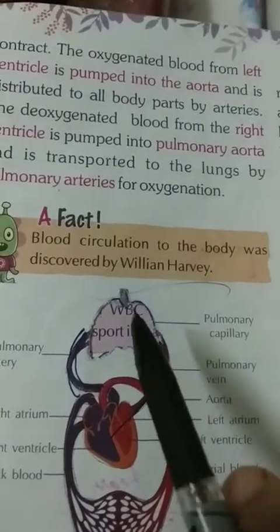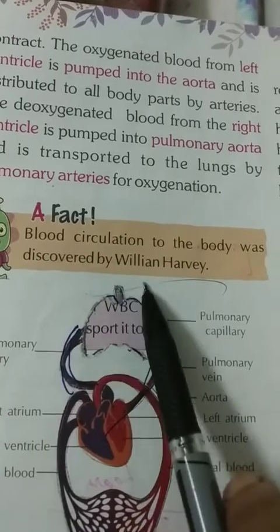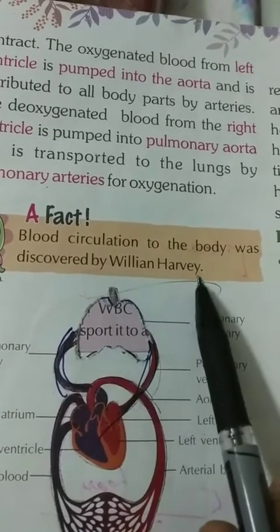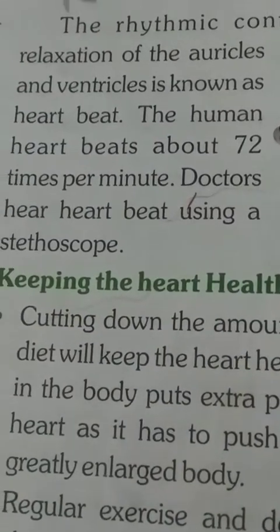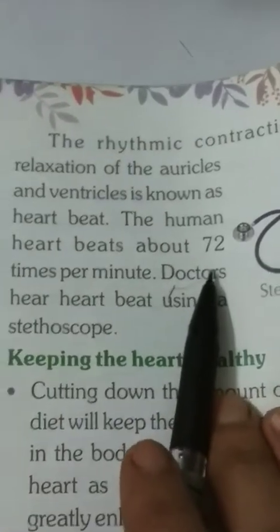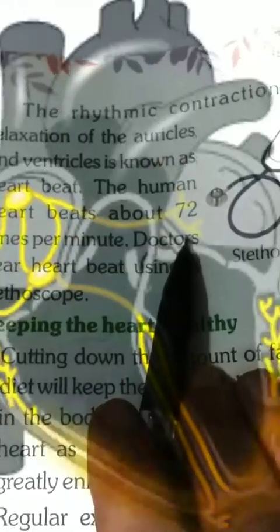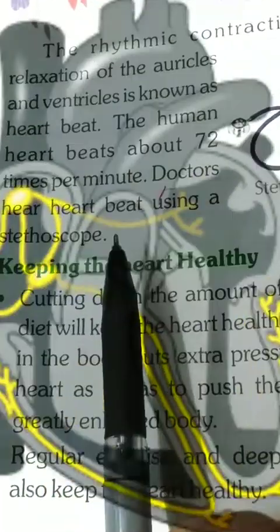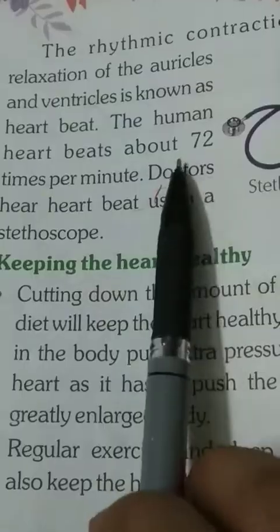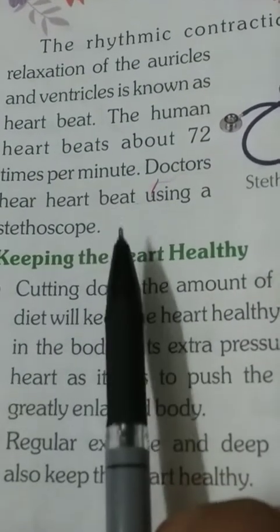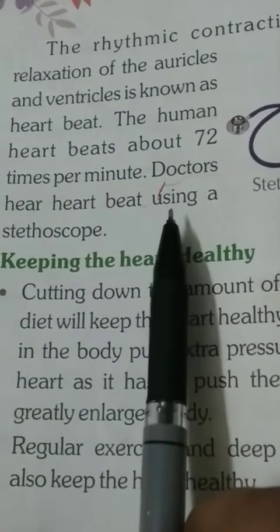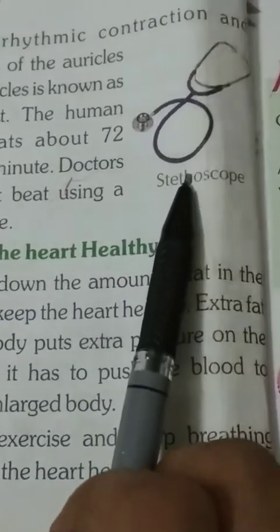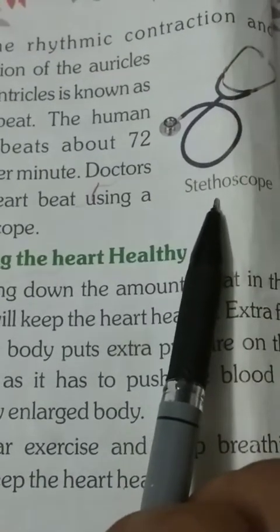Blood circulation in the body was discovered by William Harvey — underline this. The rhythmic contraction and relaxation of the auricles and ventricles is known as heartbeat. The human heart beats about 72 times per minute, and doctors hear the heartbeat by using a stethoscope.